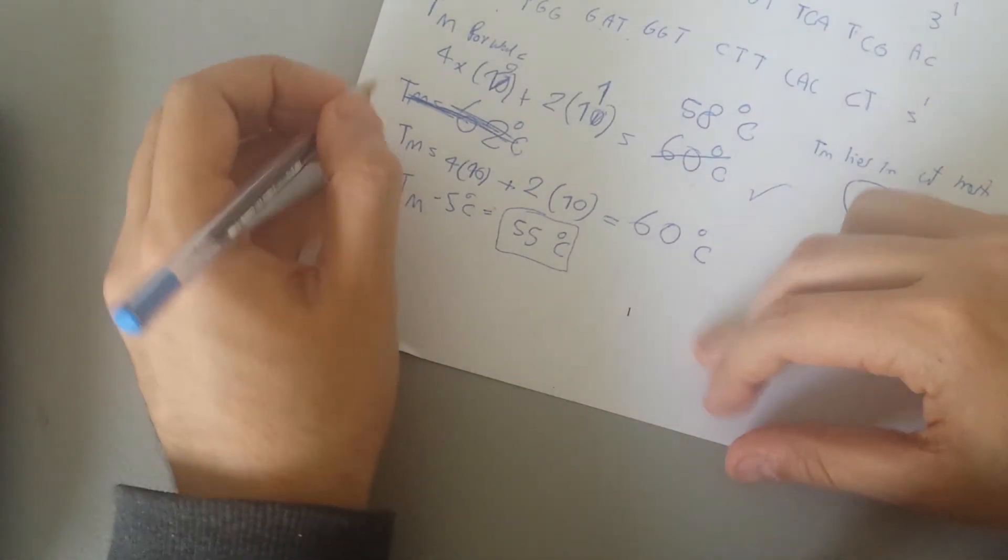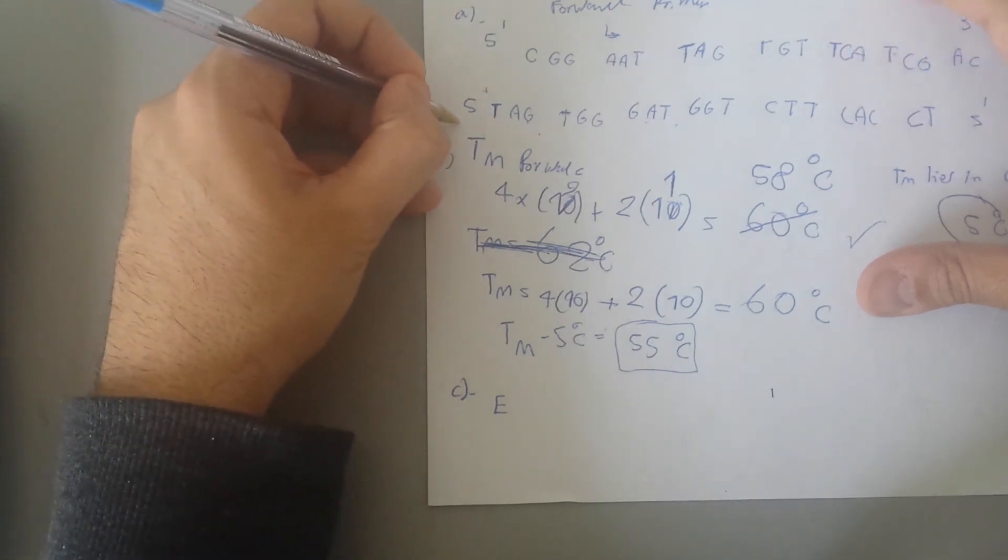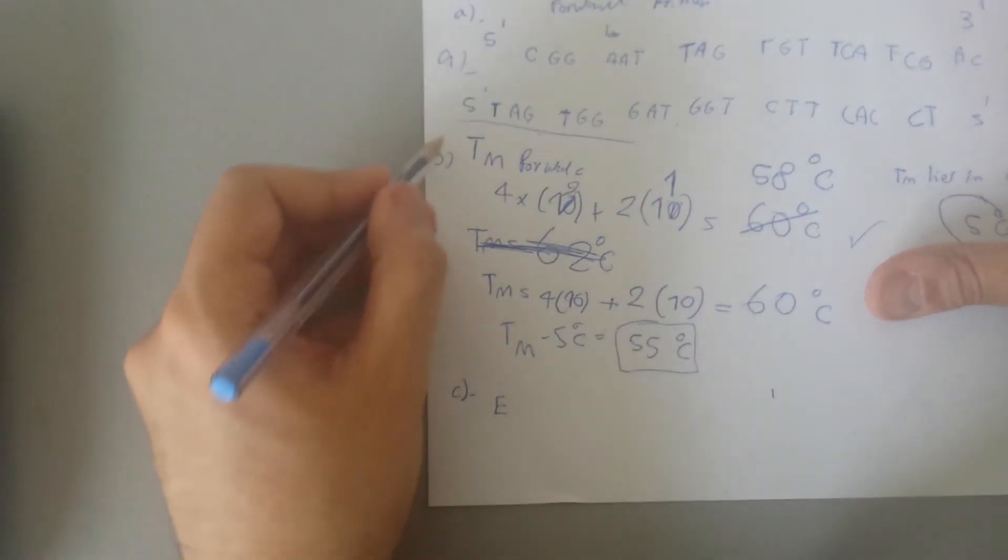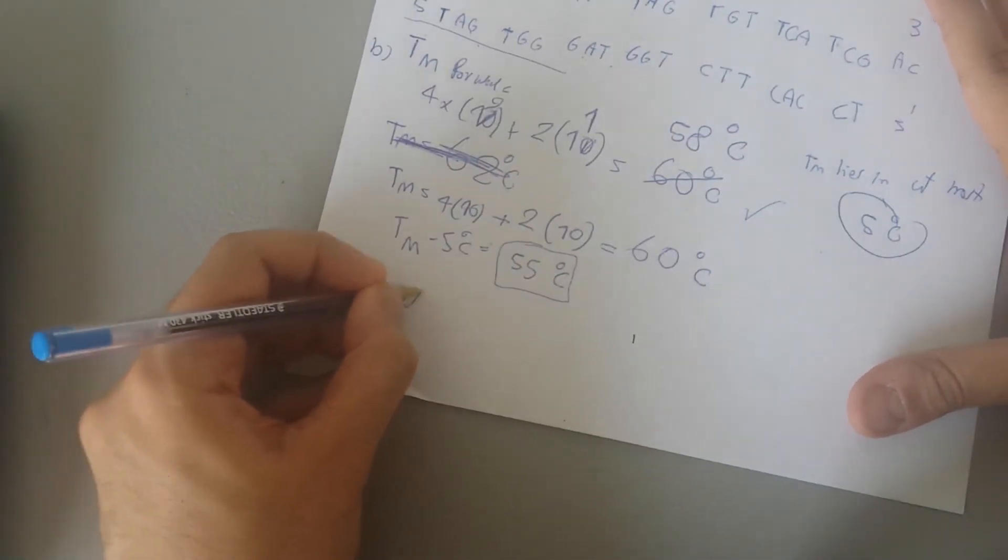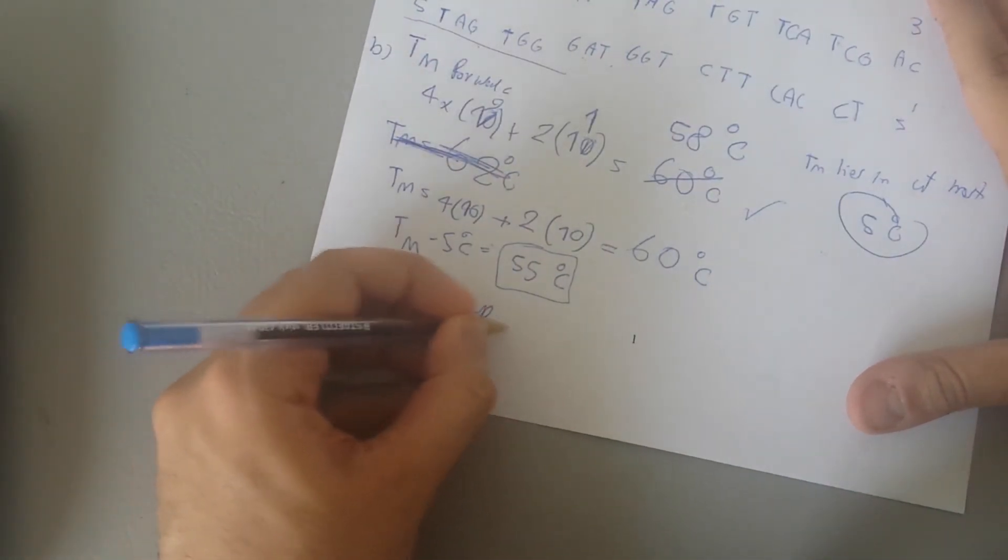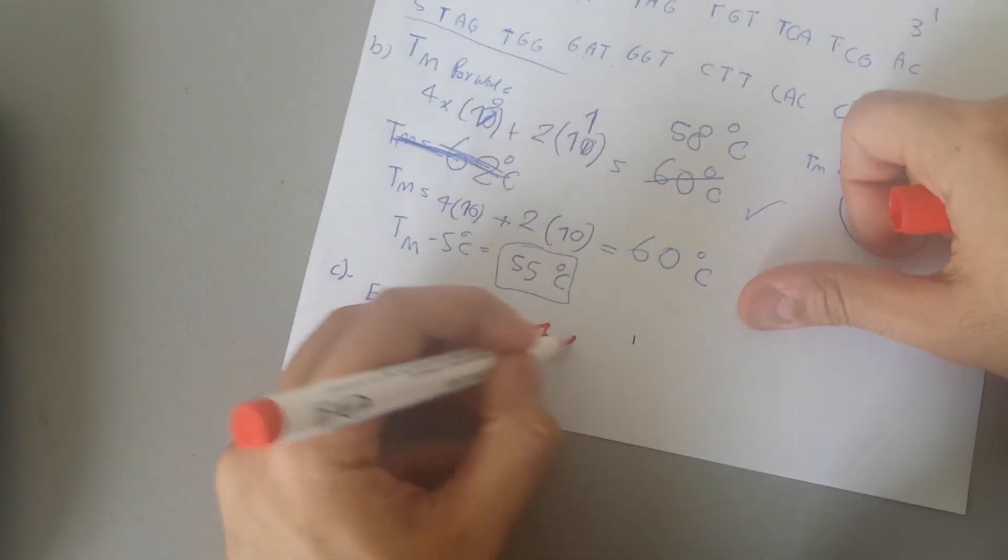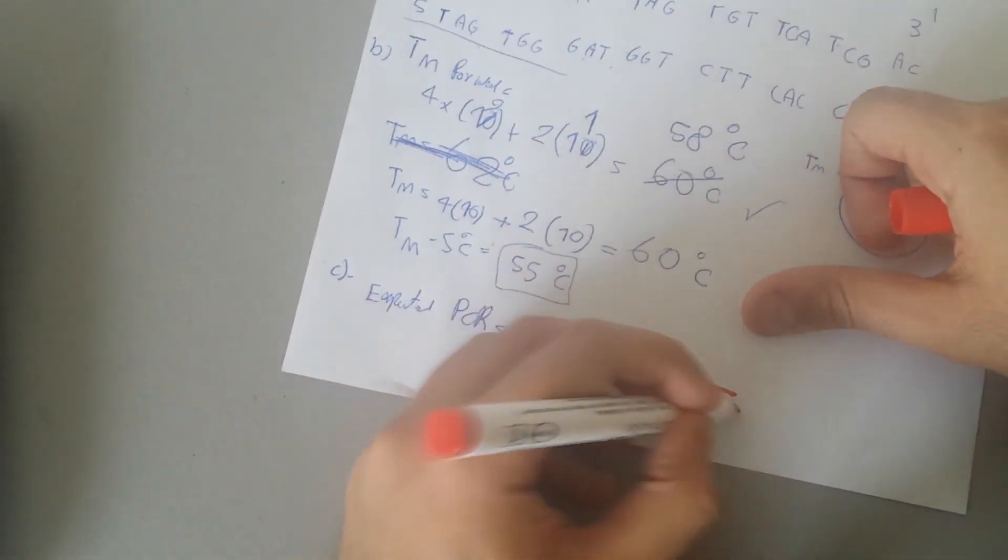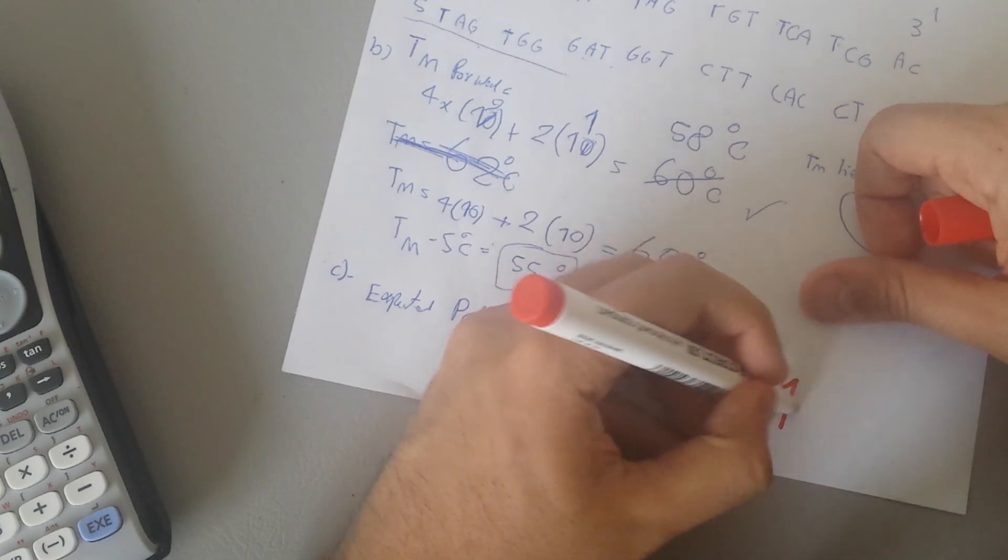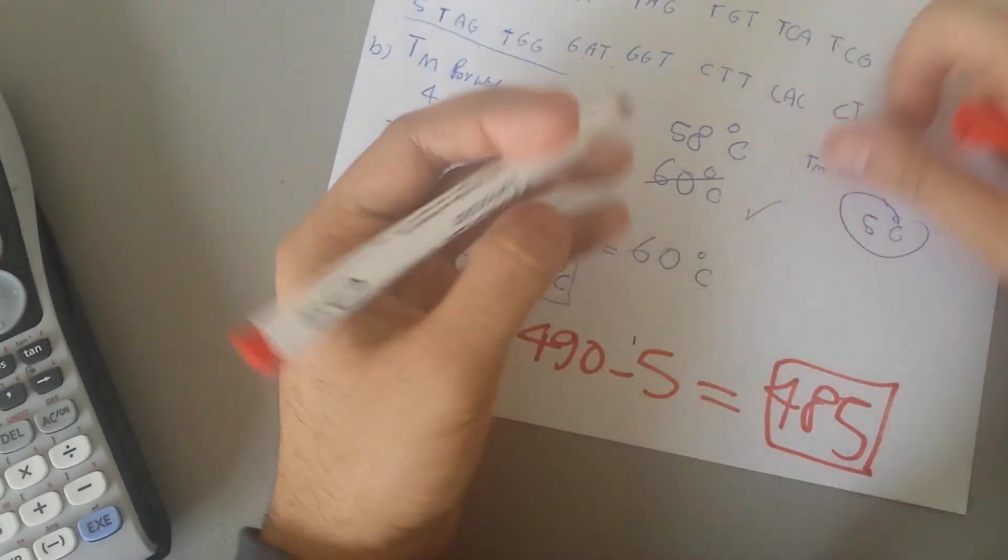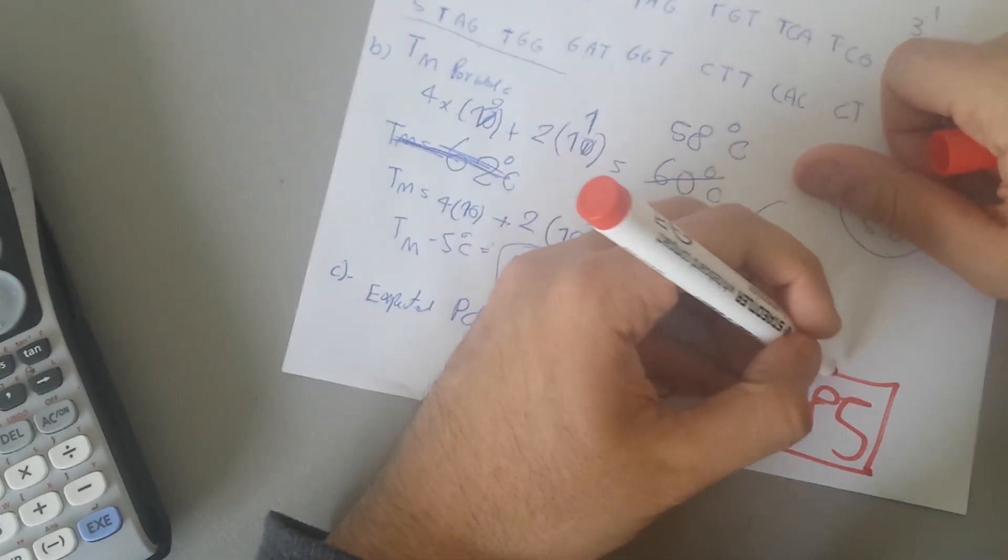Then what you're going to do is very easy math. This is C, this is B, this is A. So the expected PCR product, let me write this in red because it looks better, 490 subtract by five, what would it be? 485. That's our expected PCR product.